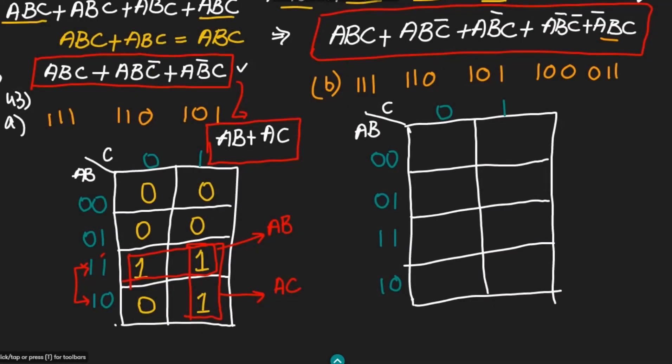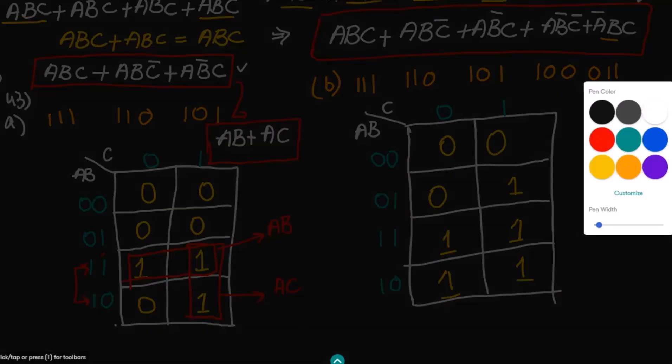Now writing ones for all the binary values which I have got here. 111 is here, 110 is here, 101 is here, 100 is here, and 011 is here. All the remaining terms are now zeros.